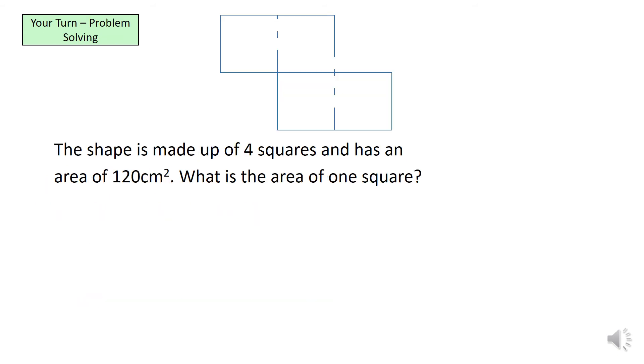I want you guys to pause the video now and have a go at this question. Okay, what we should have first of all done is called square S for square. And we know that 4S, which because there are 4 squares, equals 120. And now, it's a simple one-step equation. We divide both sides by 4 and we would have had S equals 1 square equals 30 cm2.